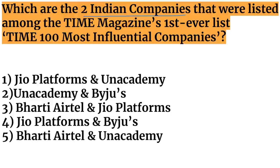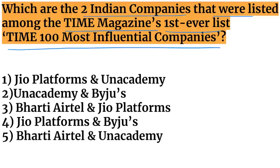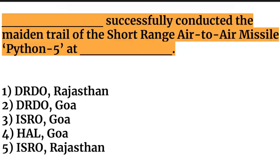Next question: which two Indian companies were listed among Time magazine's first-ever list of Time 100 Most Influential Companies? The two companies listed are Jio Platforms and Byju's. Also remember that the Time 100 Most Influential Companies list was released for the very first time.